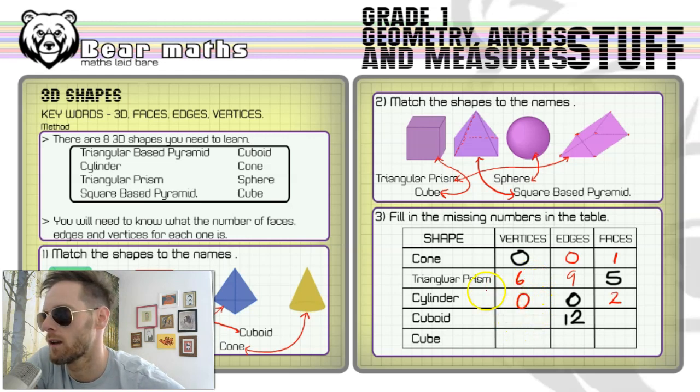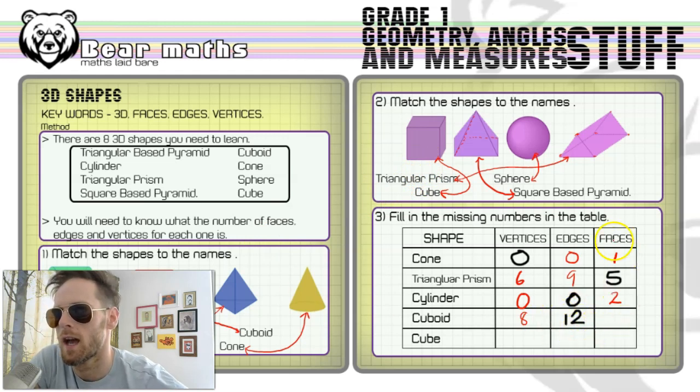Cuboid is again underneath here. You could always look at the cube to do this. The vertices: one, two, three, four, five, six, seven, eight vertices—that's the corners. The edges, how many edges join it up? One, two, three, four, five, six, seven, eight, nine, ten, eleven, twelve, which we've got already. And then the faces: one, two, three, four, five, six.